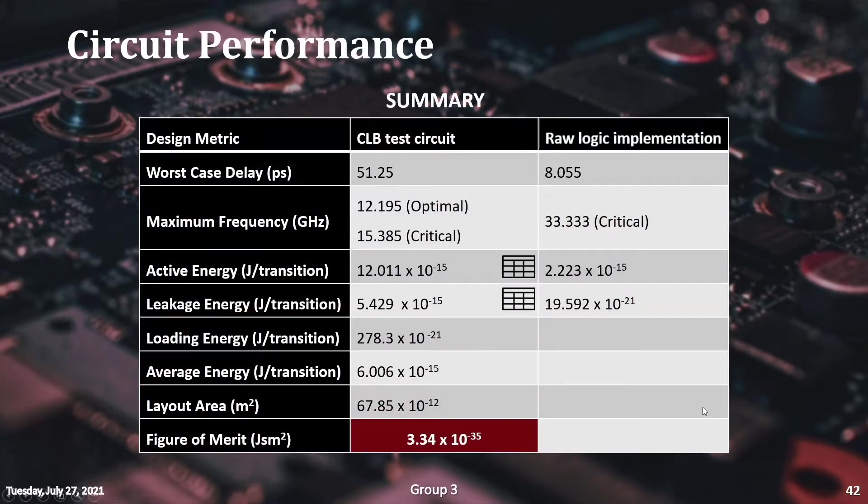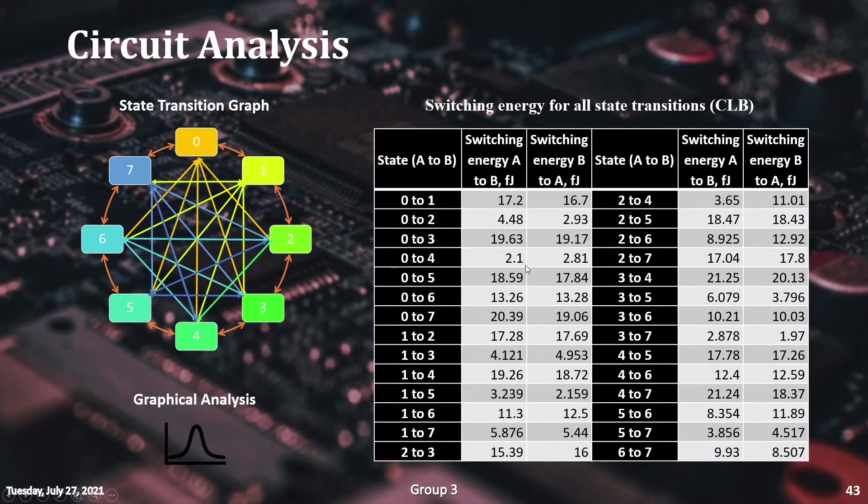After finding the maximum operating frequency, the energy requirements of the circuit were measured and compiled in this summary table. The active energy of the circuit is the average energy of all the state transitions in the circuit. These values are shown in this table here.